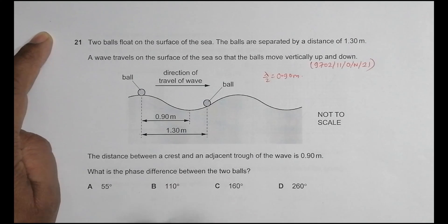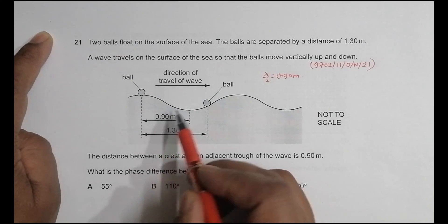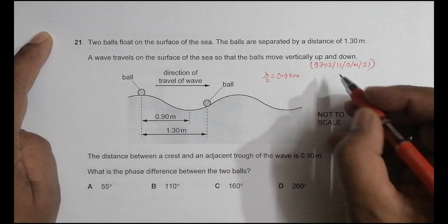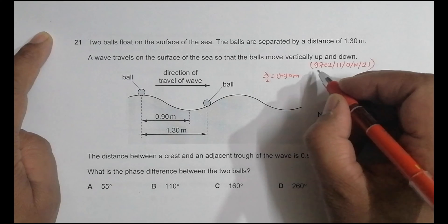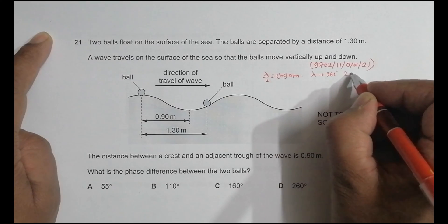What is the phase difference between the two balls? So it's very easy here. So since the separation between this is lambda by 2, we must have, in a wave, when there is lambda phase difference, it is 360 degrees or 2 pi radians.